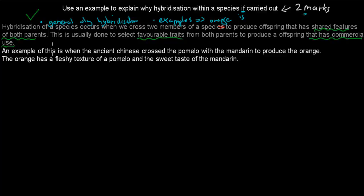So an example of this is when the ancient Chinese crossed the pomelo with the mandarin to produce the orange. So these were the same species. They're obviously not the same fruit exactly, but they do belong to the same species of citrus fruit.